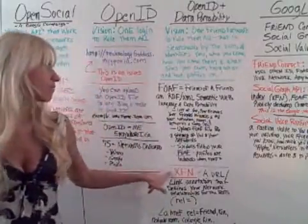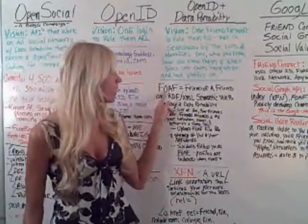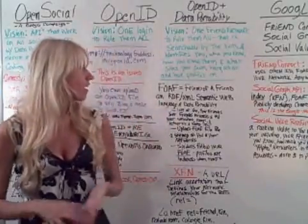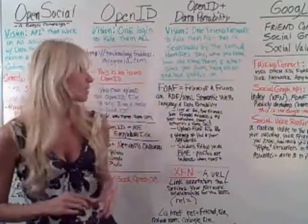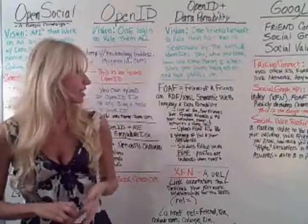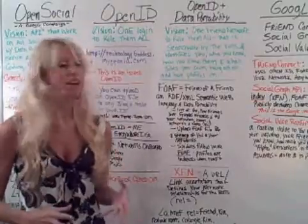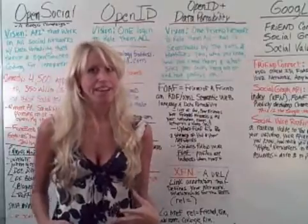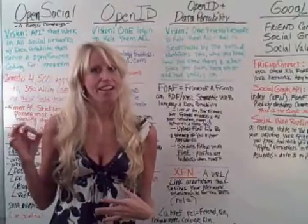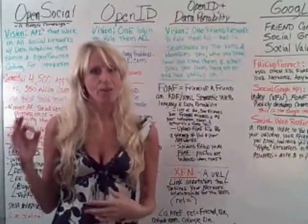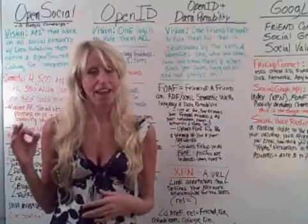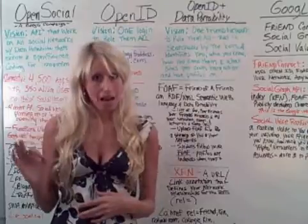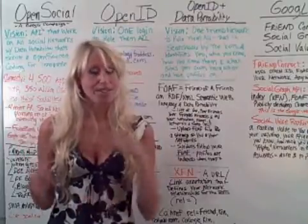FOAF — F-O-A-F — stands for Friend of a Friend. It is an RDF/XML semantic web language and data portability file. Basically, it's a site map of your networks — and I want you to really take note of that. It's a site map of your network, and it's searchable and indexable by the bots.